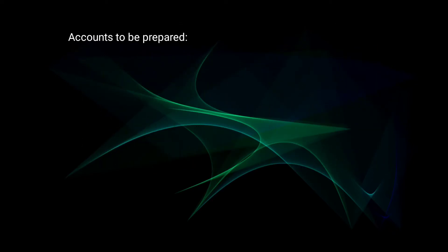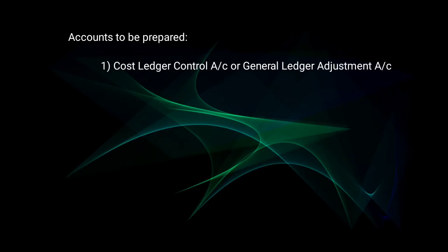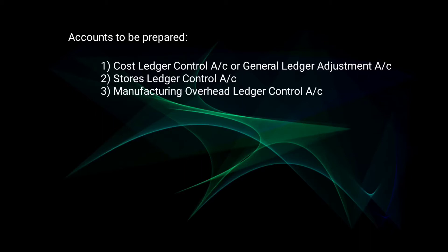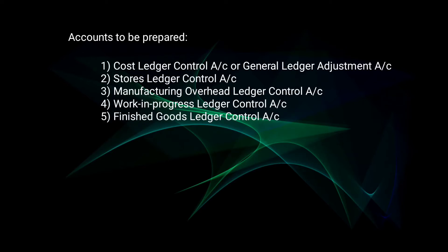The accounts to be prepared for this question will be: first, Cost Ledger Control Account (also called General Ledger Adjustment Account); second, Stores Ledger Control Account; third, Manufacturing Overhead Ledger Control Account; fourth, Work in Progress Ledger Control Account; fifth, Finished Goods Ledger Control Account; and sixth, Cost of Sales Account.